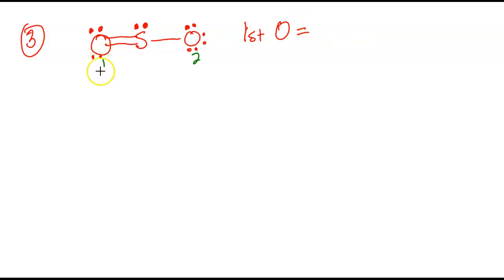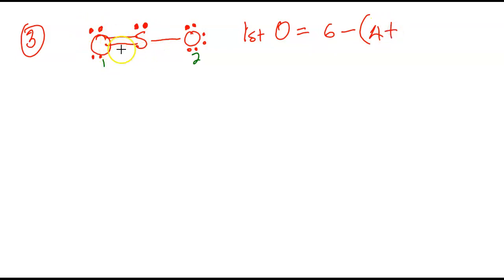So let's do this problem. For the first oxygen — the one to the left — the formal charge is equal to the valence electron minus the sum of the dots plus the bonds. Oxygen is in group six again, subtracted by the number of dots. The number of dots here is one, two, three, four — four dots — plus how many bonds do we have here? Two. Four plus two is six. Six minus six will give you zero. This oxygen has no charge, so no need to put zero.